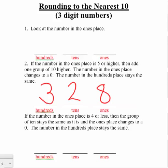First, I'm going to look at my number in the ones place, and I see that it is an 8. My directions say if the number in the ones place is 5 or higher, and 8 is 5 or higher, then I'm going to add one group of ten higher to my tens place.